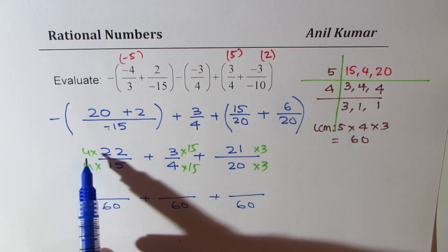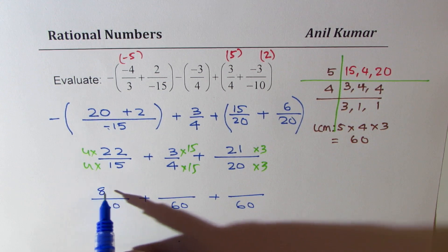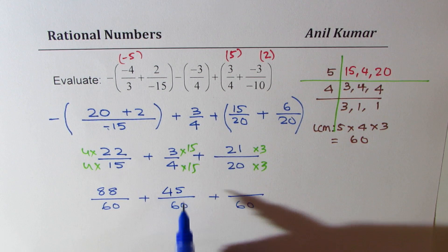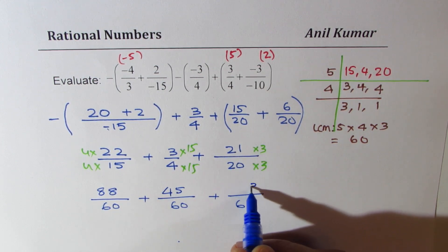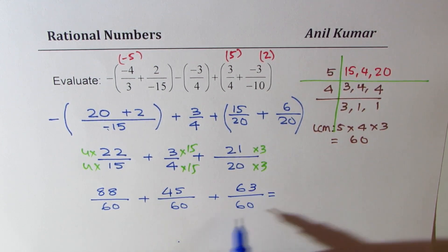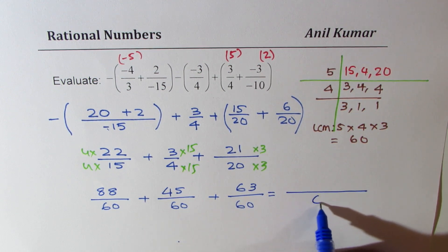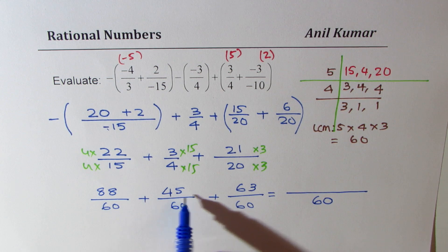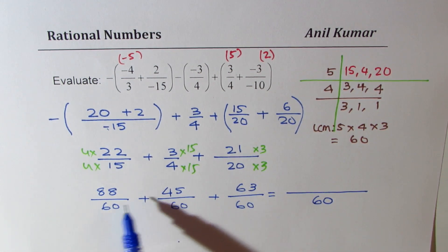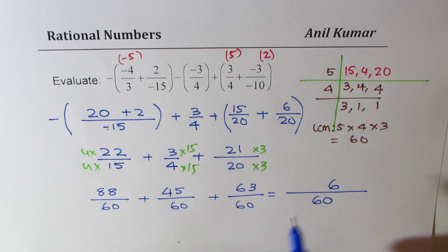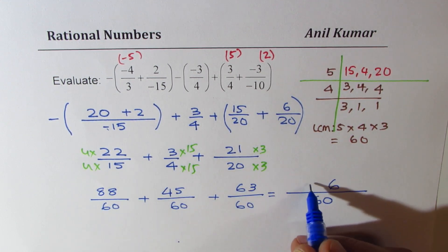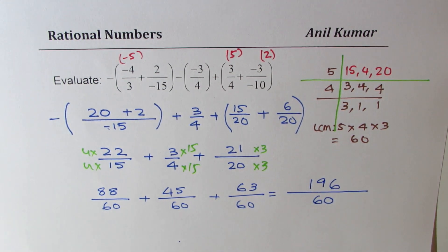Now, let's multiply numerators. 4 times 22 is 88. 15 times 3 is 45. And 21 times 3 is 63, correct? So, you could write this as common denominator of 60. And the numerator is add them, correct? 5 plus 3 is 8, 8 plus 8 is 16, 6, 1. 7 plus 4 is 11, 11 plus 8 is 19. So, we get 196 over 60.